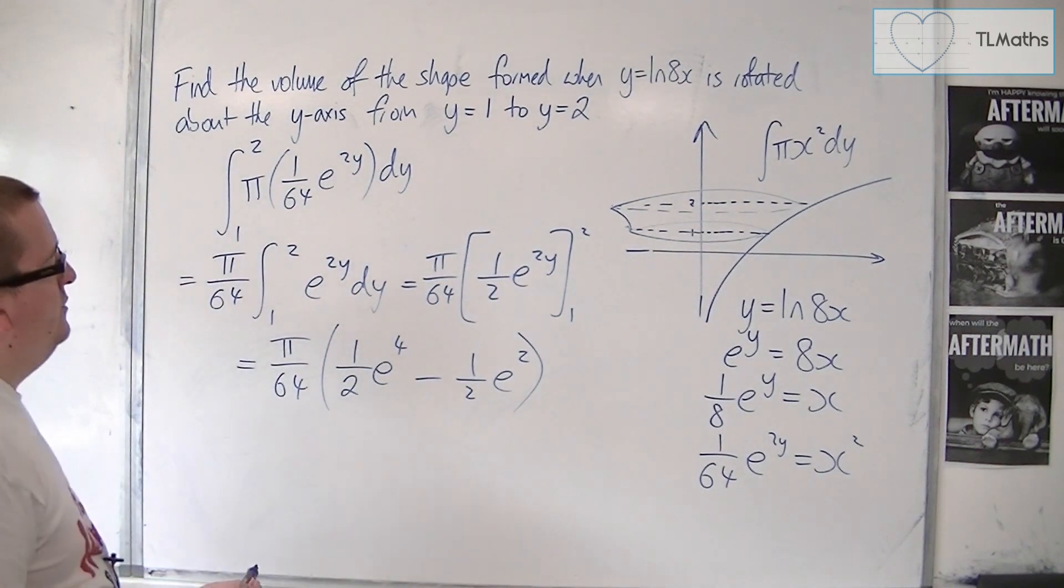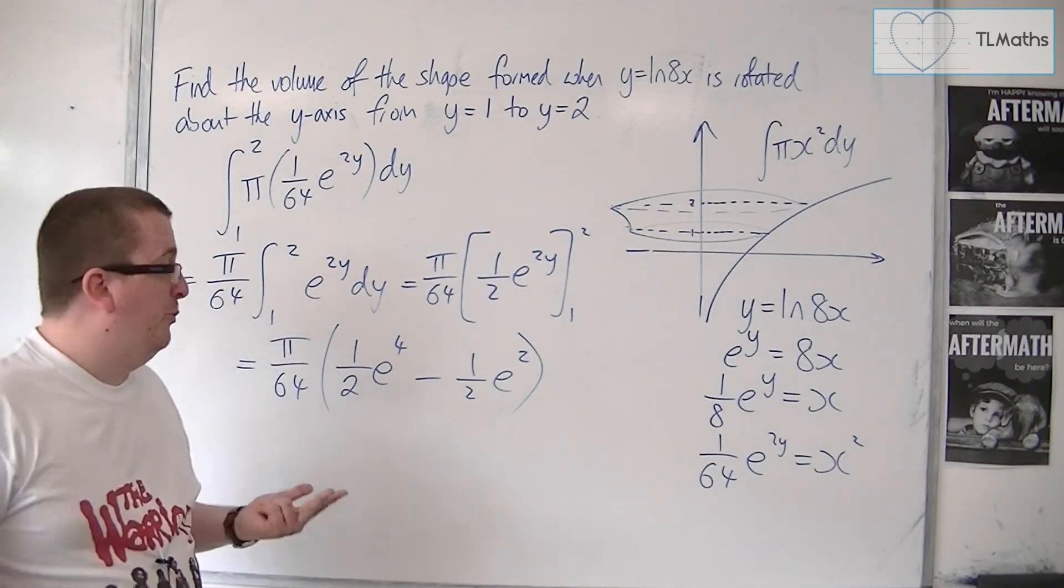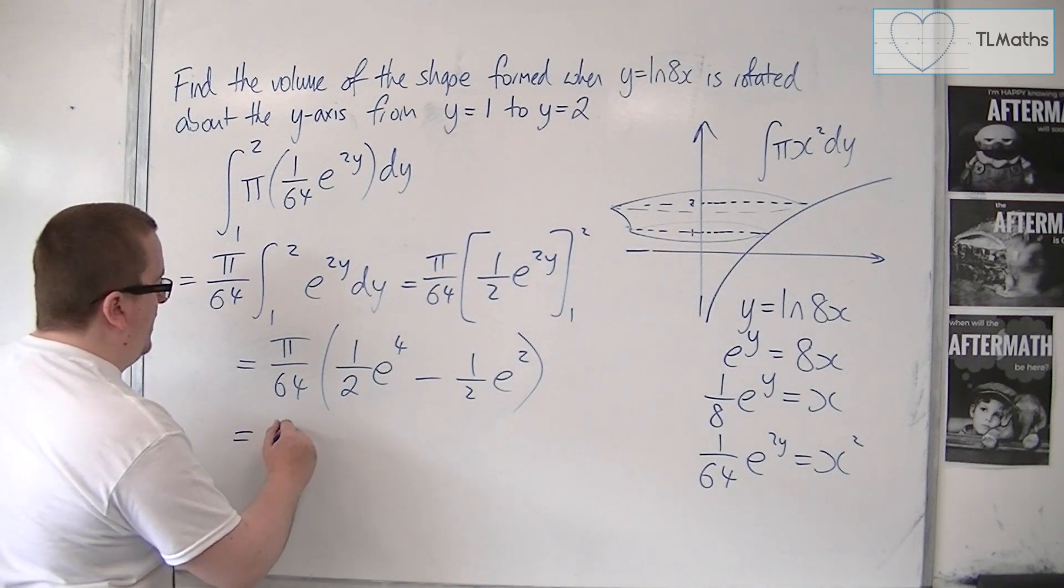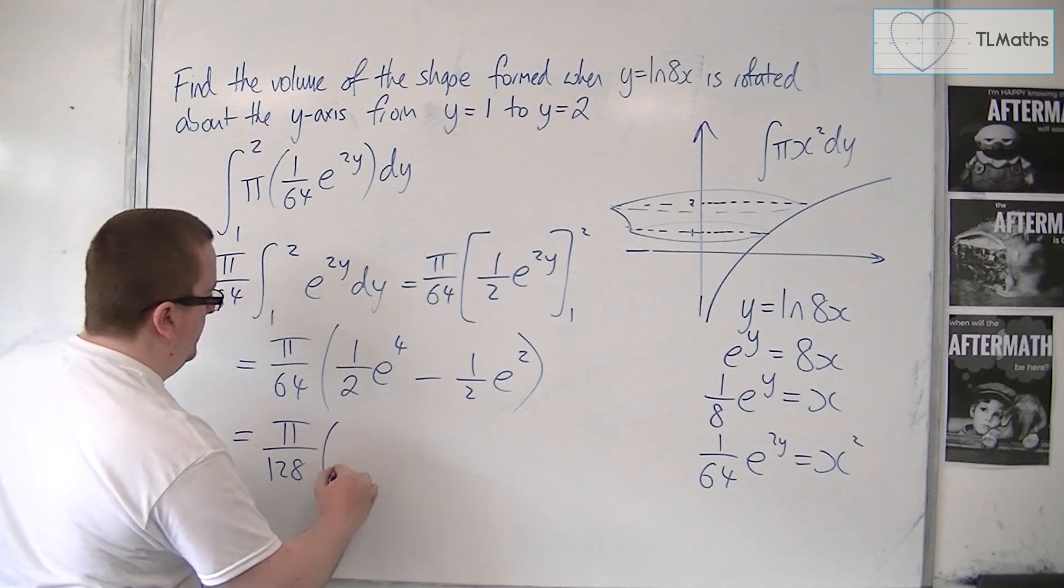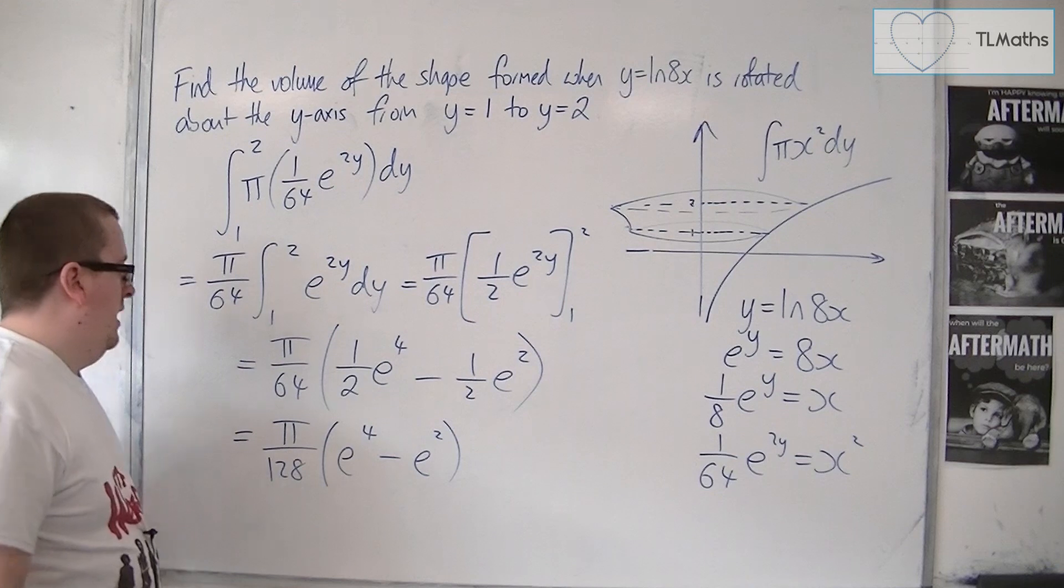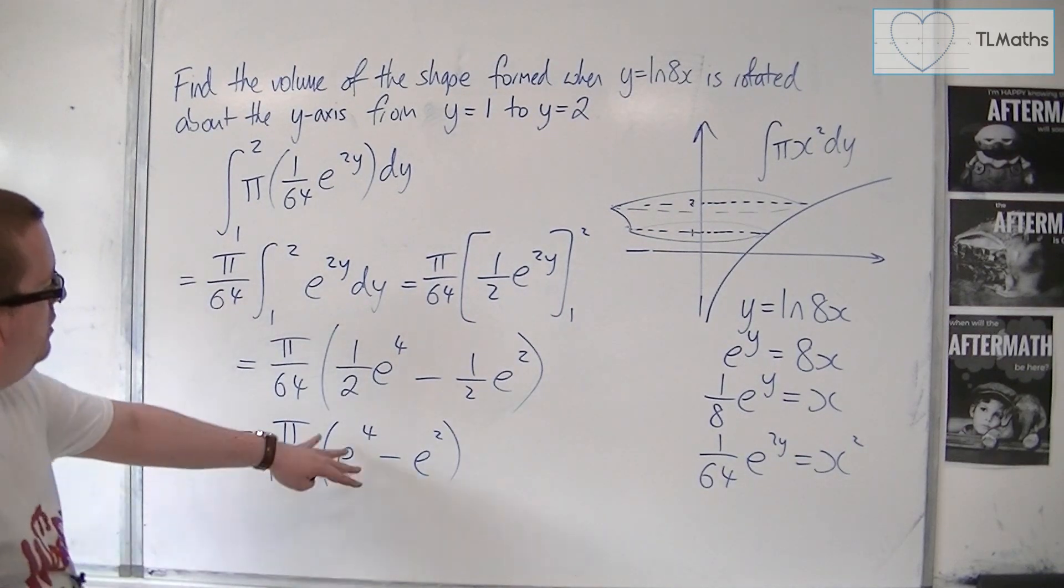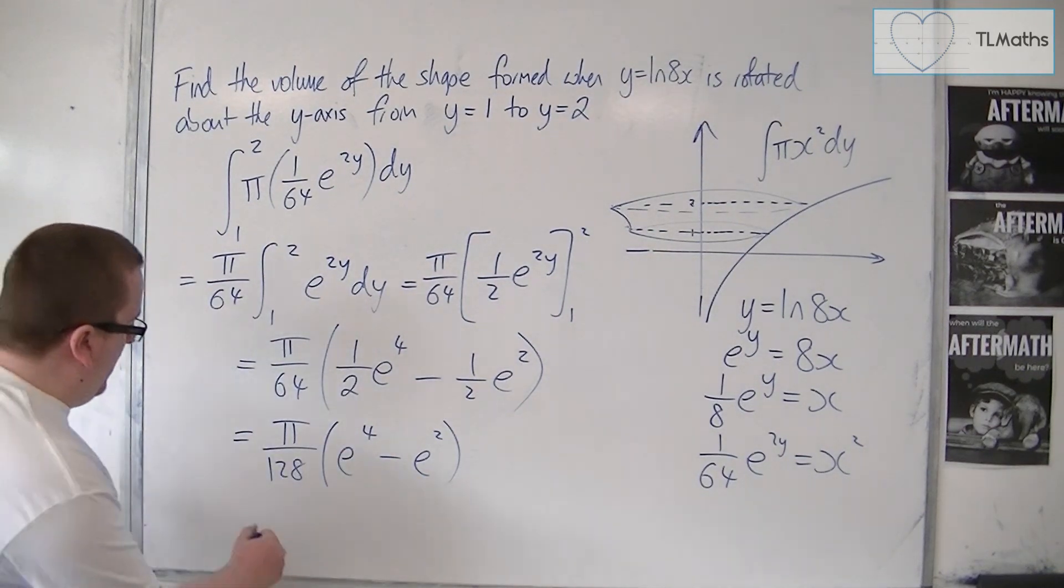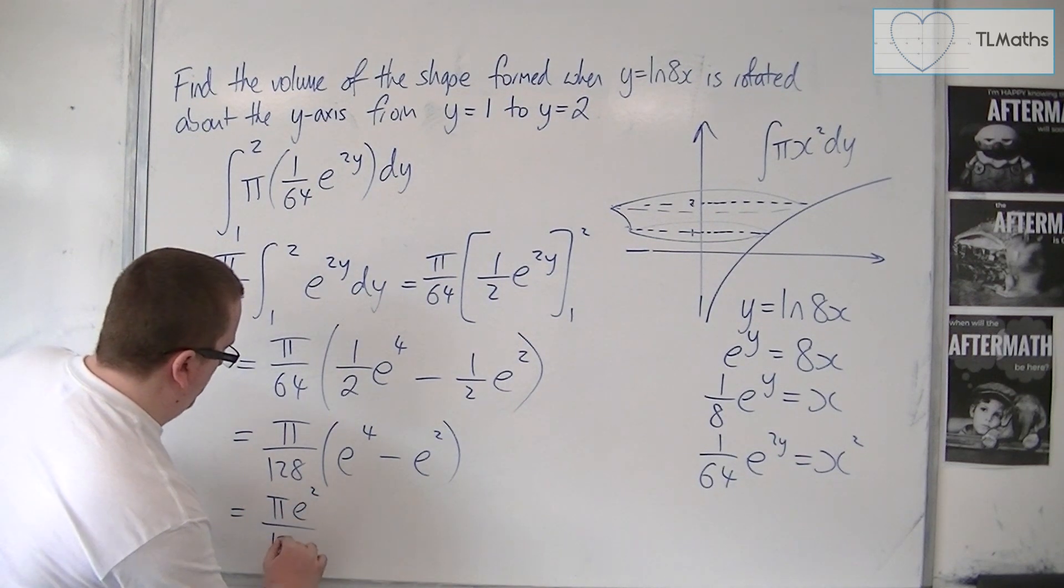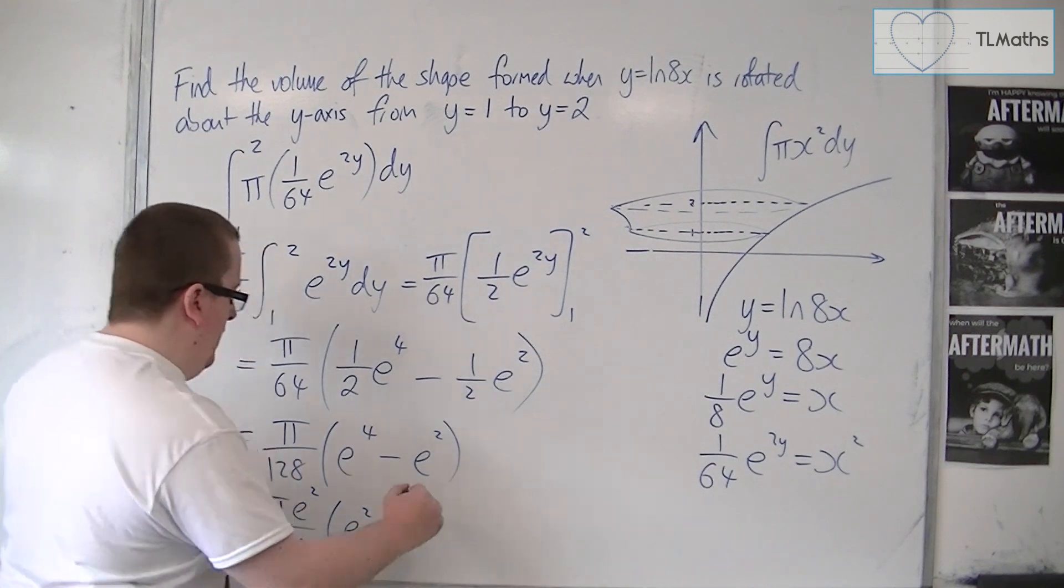OK. And to write this in as simple form as possible, I'm going to factor out the half. And so we're going to have π over 128 e to the 4, take away e to the 2. I mean, you could, I guess, factor out e to the 2 as well. π e to the 2 over 128 e to the 2 minus 1.